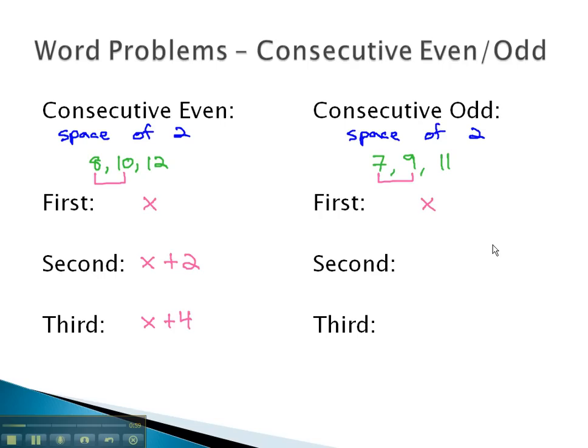So similarly, we will call the first consecutive integer x. To represent the next with a space of 2, we add 2. The third, we add 2 more, or 4. In this way, consecutive even and odd integers are set up and solved the same way. The only difference is the final answer.